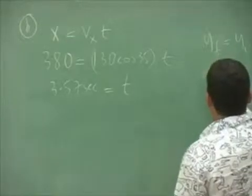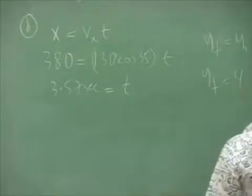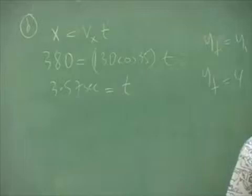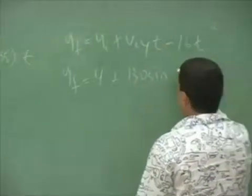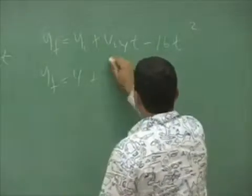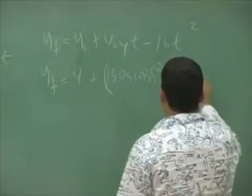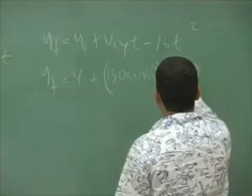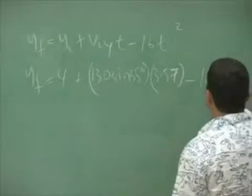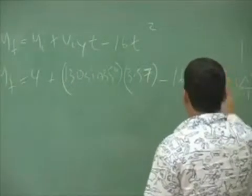Y final, we don't know. Y initial is 4. The initial Y velocity is 130 sine of 35. T is equal to 3.57. Minus 16 times 3.57 squared.